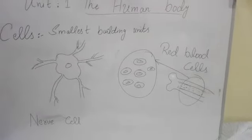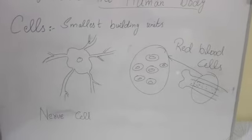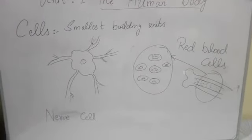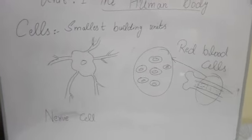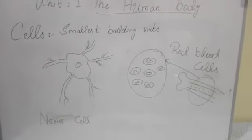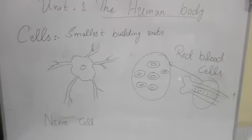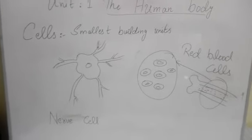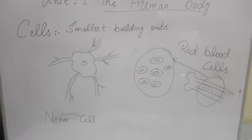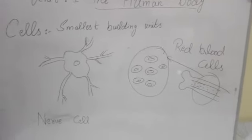Next, we have red blood cells. Red blood cells are another type of cell. Their function is to provide oxygen to our whole body. Red blood cells supply oxygen throughout the whole body.